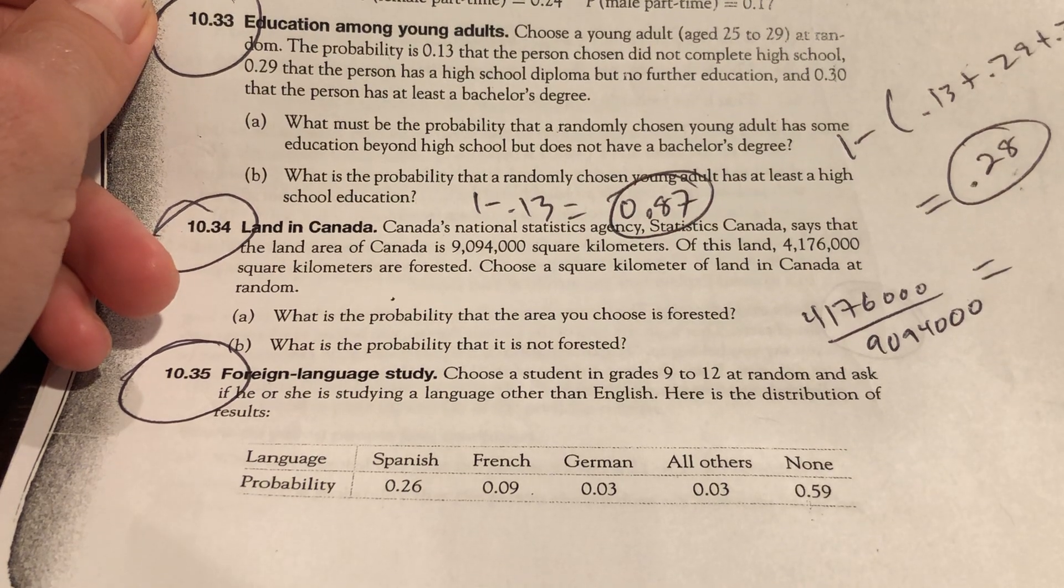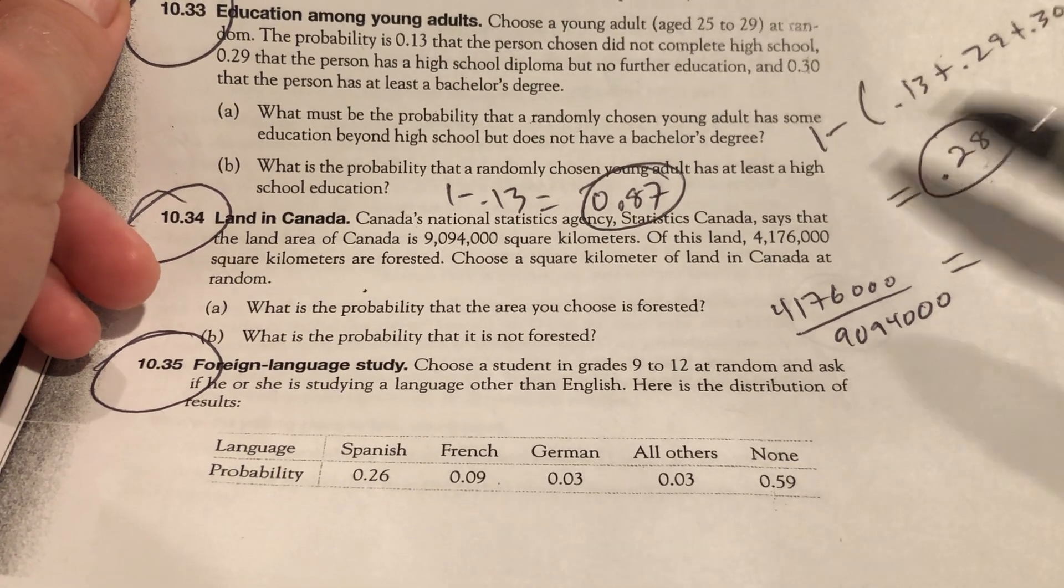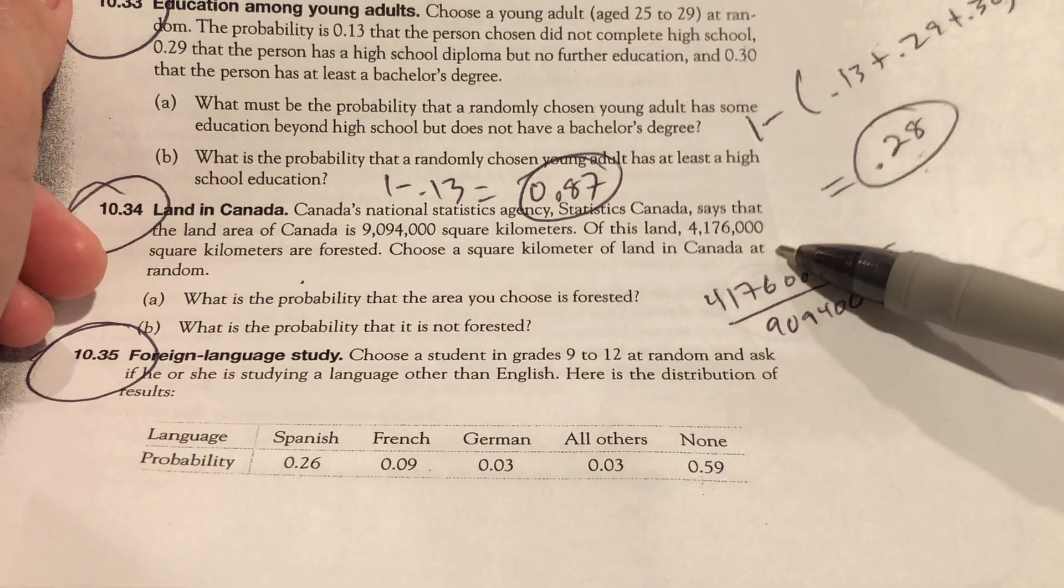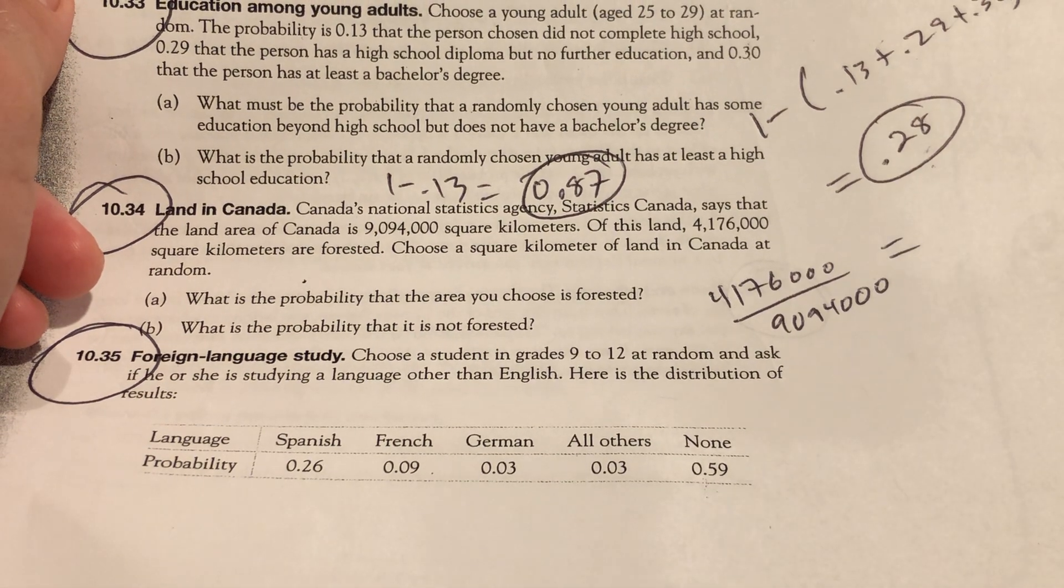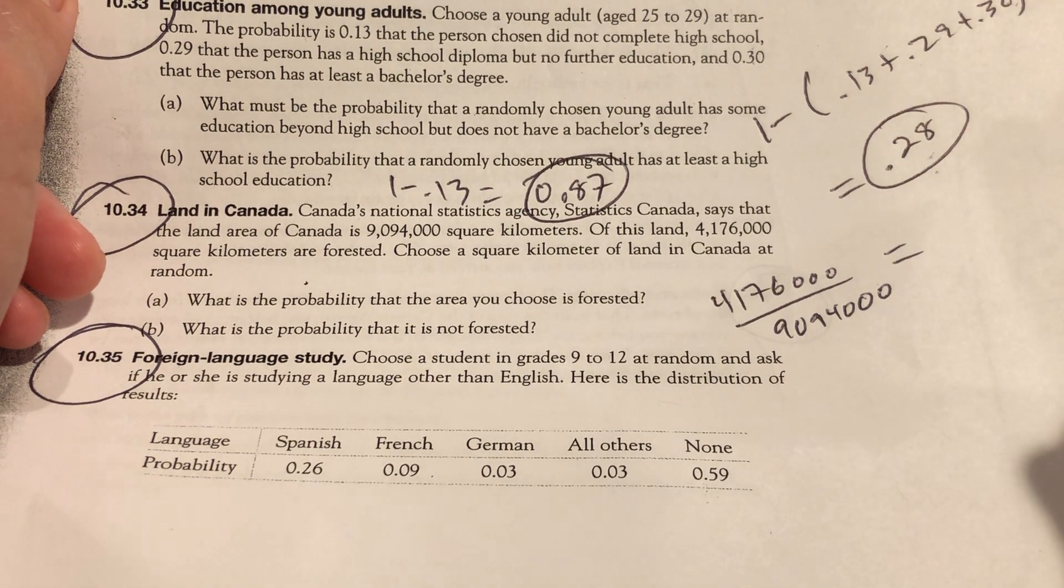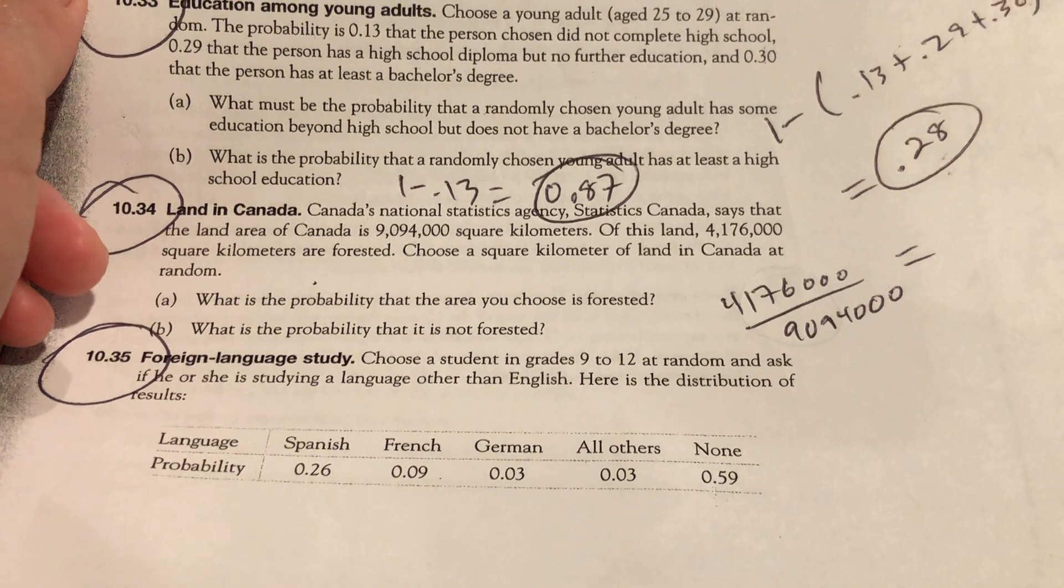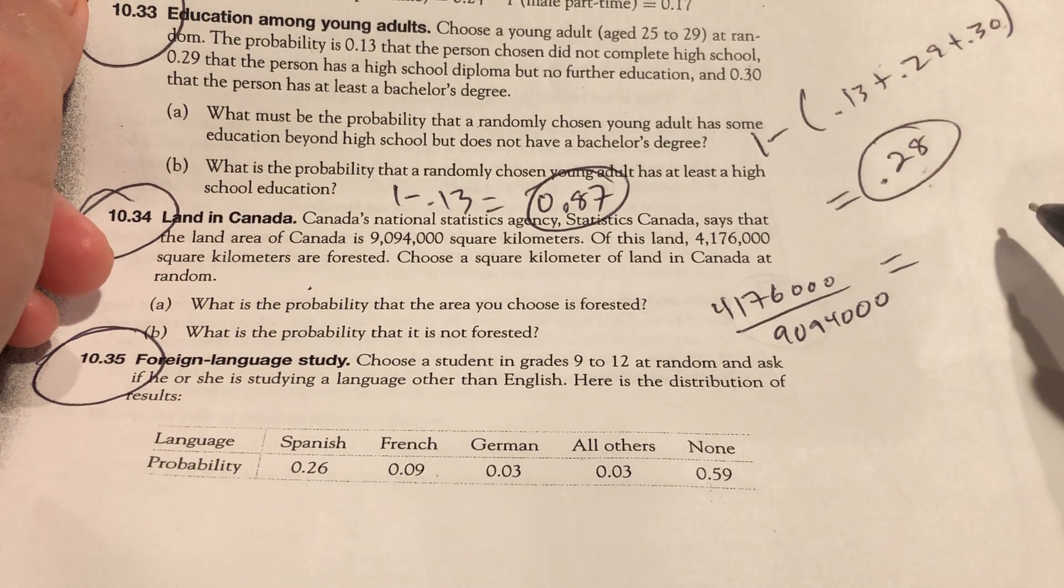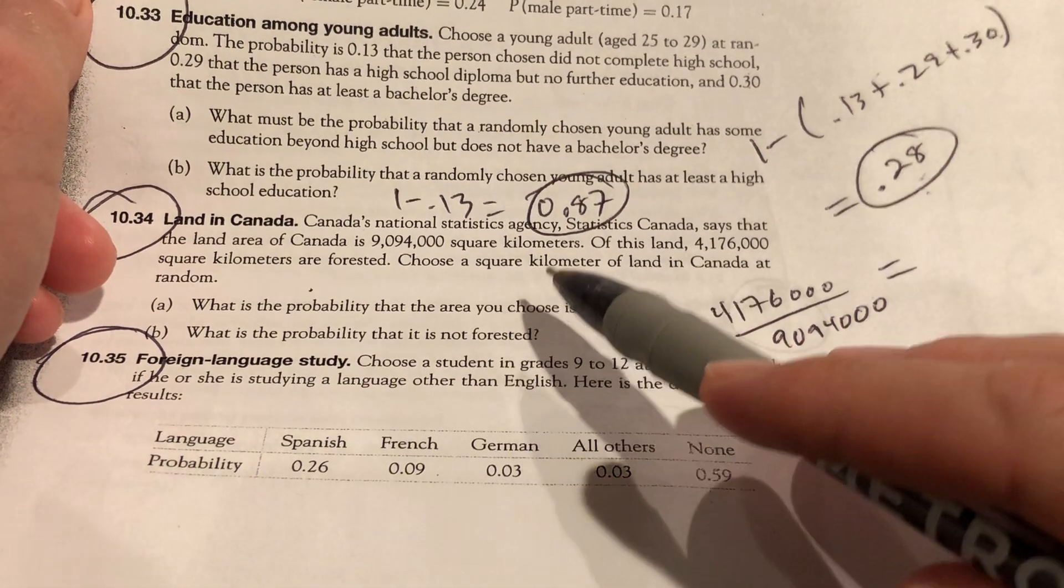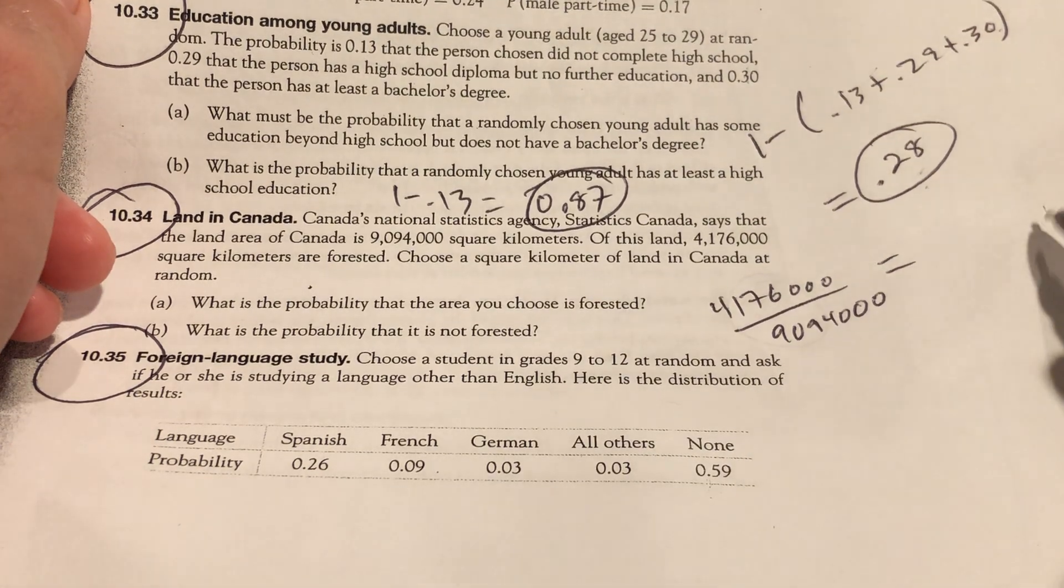Stats Canada. That sounds like a fun place to work. All right, so what's the probability you choose an area that is forested? Do this, divide it by this. I am going to go, like, 0.454, something like that. Type that in. What's the probability it's not forested? It's going to be one minus that answer that you got.